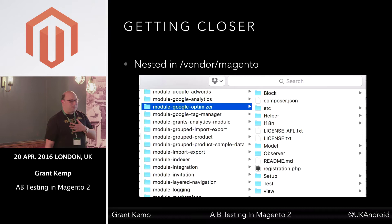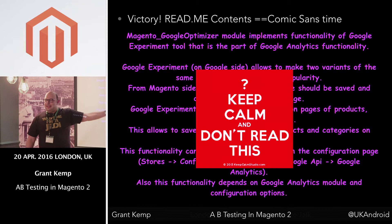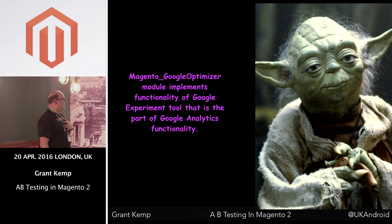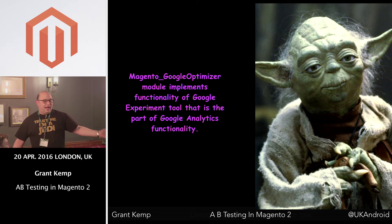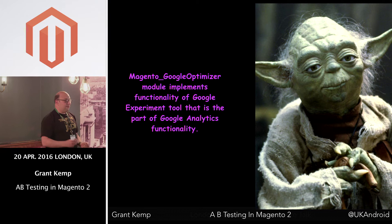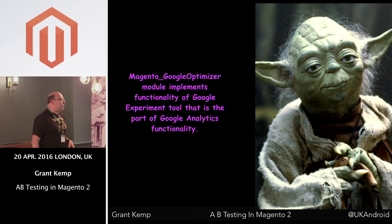When I'm reading from the README, I prefer to use a Yoda accent. The README says: 'Magento Google Optimizer Module implements the functionality of Google Experiment Tool that is part of the Google Analytics functionality.' Done! That's it! I've actually shared an updated README for them after this as well, so hopefully they'll use that.